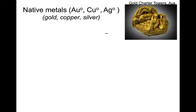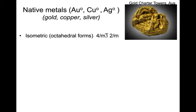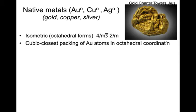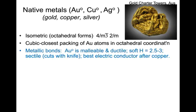Native metals include gold, copper, and silver. The abbreviations in the periodic table of the elements are Au, Cu, Ag — from the Latin aurum, cuprum, argentum. Native metals have isometric, commonly octahedral forms, composed of cubic close-packed atoms in octahedral coordination. They have metallic bonds, so gold and copper are malleable and ductile. Gold is soft — it's sectile, cuts with a knife.